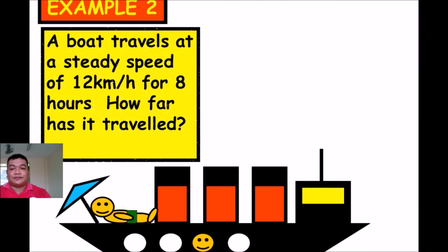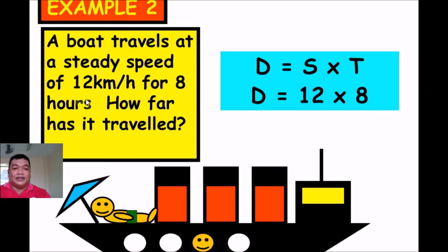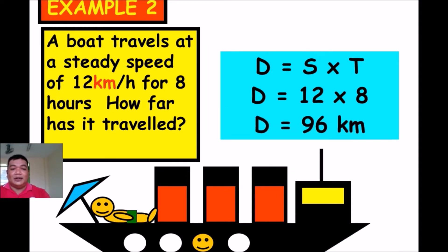Example 2: A boat travels at a speed of 12 kilometers per hour for 8 hours. How far has it traveled? Distance = Speed × Time. Our speed is 12 km/h and time is 8 hours. Multiply 12 × 8 = 96. Cancel the hours, and the remaining unit is kilometers. The distance traveled by the boat is 96 kilometers.